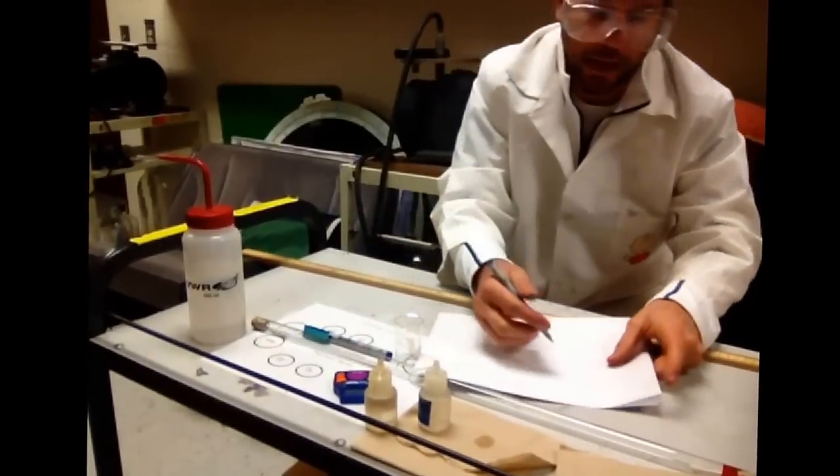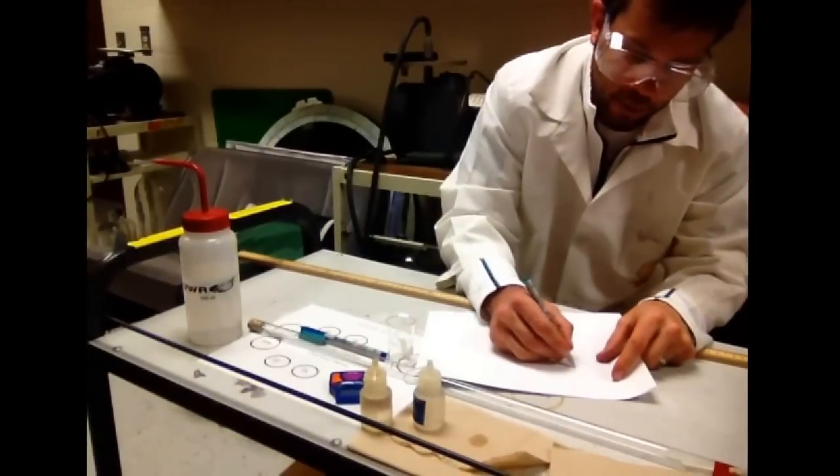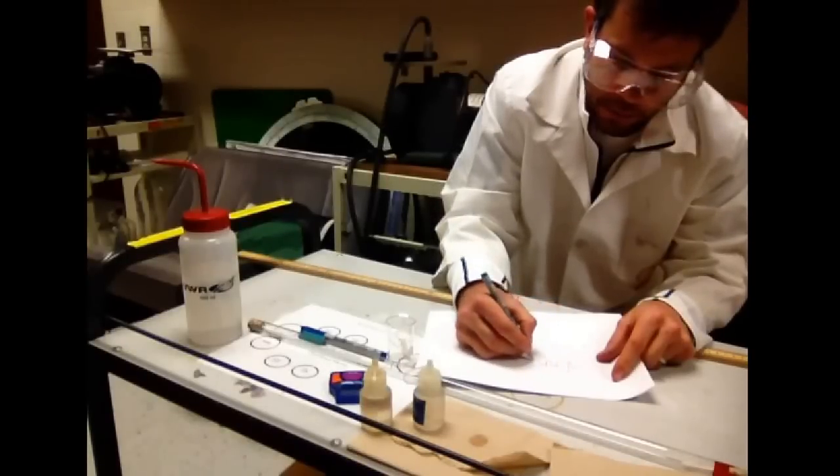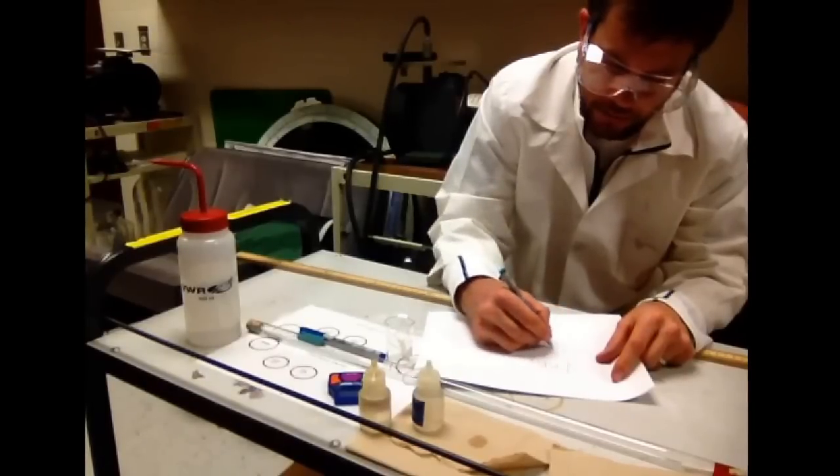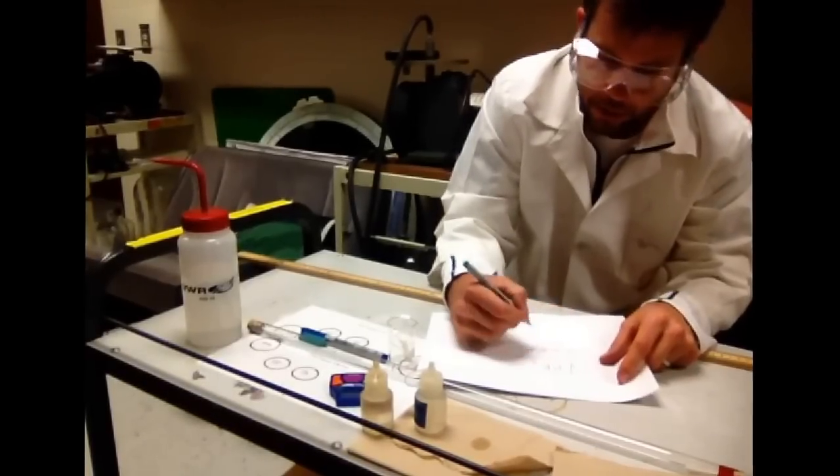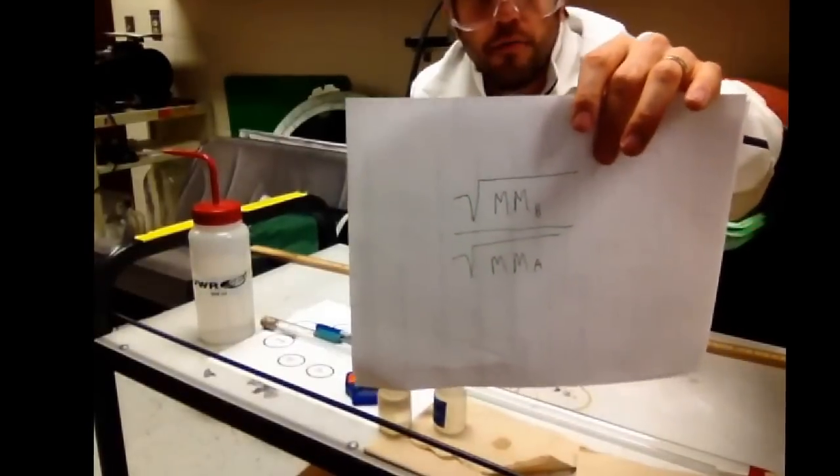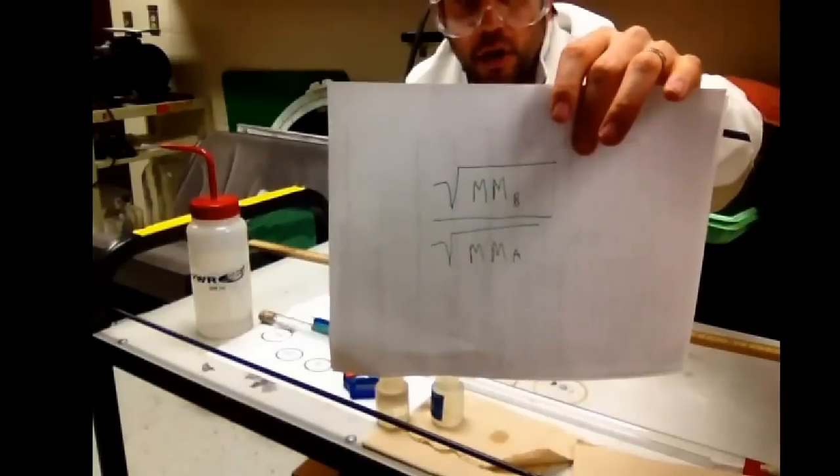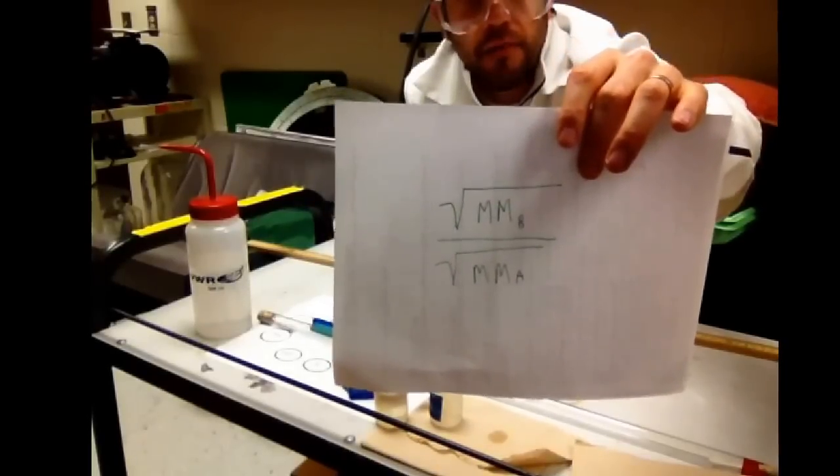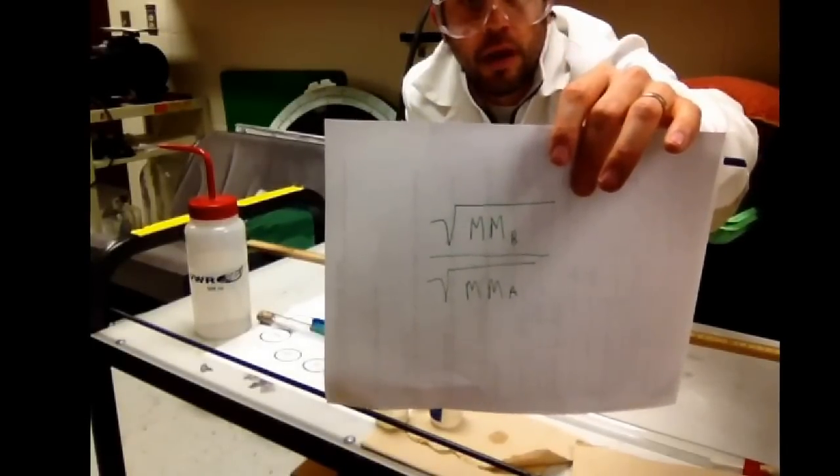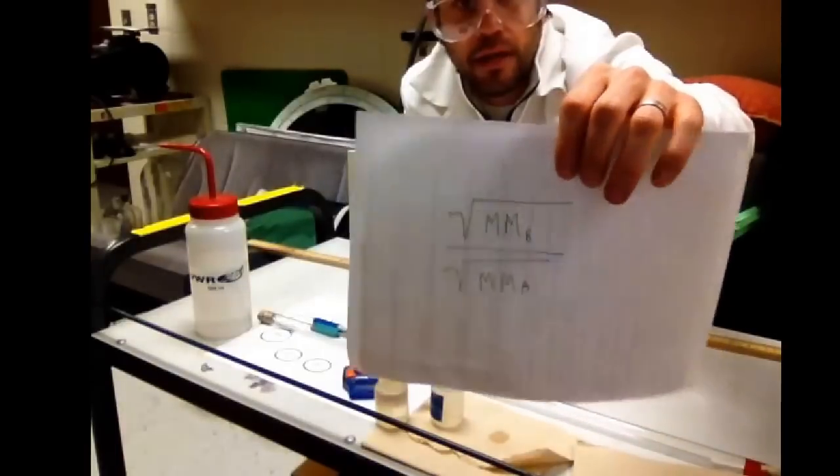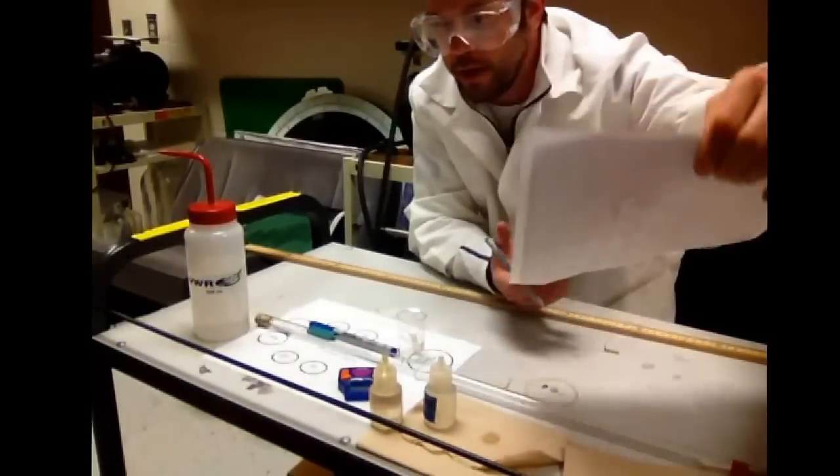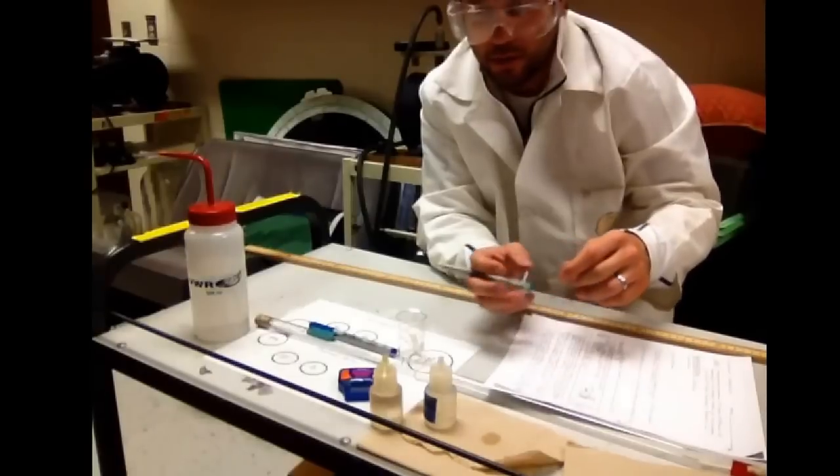Graham states that the rate that they travel is proportional to the molar masses of both gases. If we were to compare the square root of the molar masses of both of those gases, then I could get an idea of who is faster. Basically, the heavier gas will travel slower, but at a rate that is proportional to the square root of their molar masses. Hopefully that helps out a little bit.